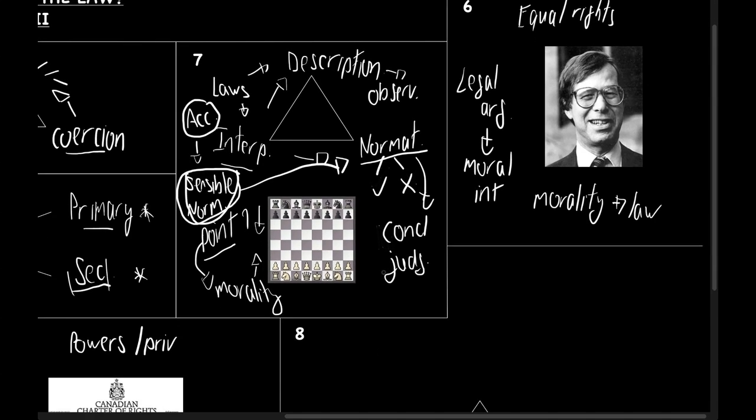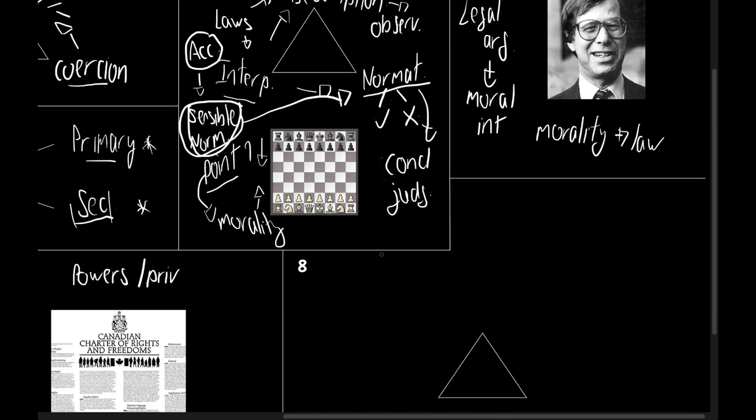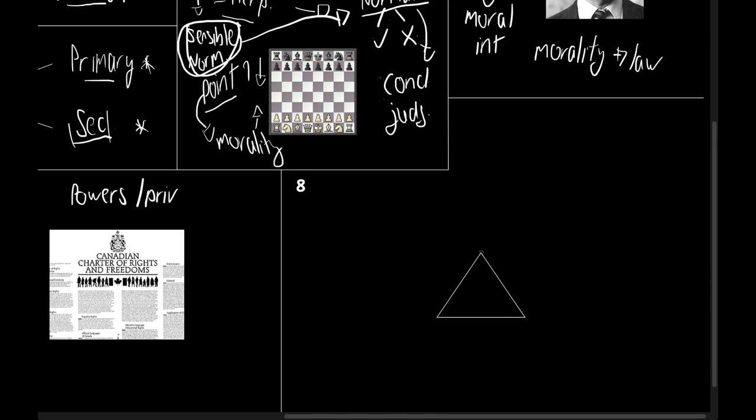Dworkin breaks down this exercise into three stages. He has what we refer to as the pre-interpretive phase. Then we have the interpretive phase and we have the post-interpretive phase.